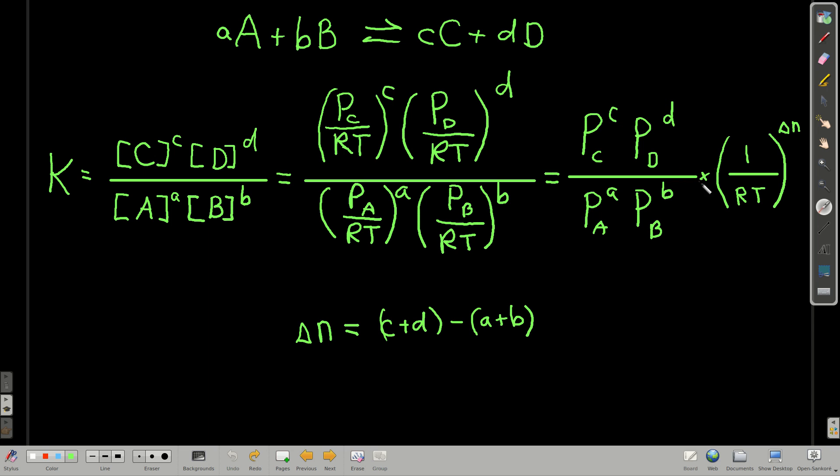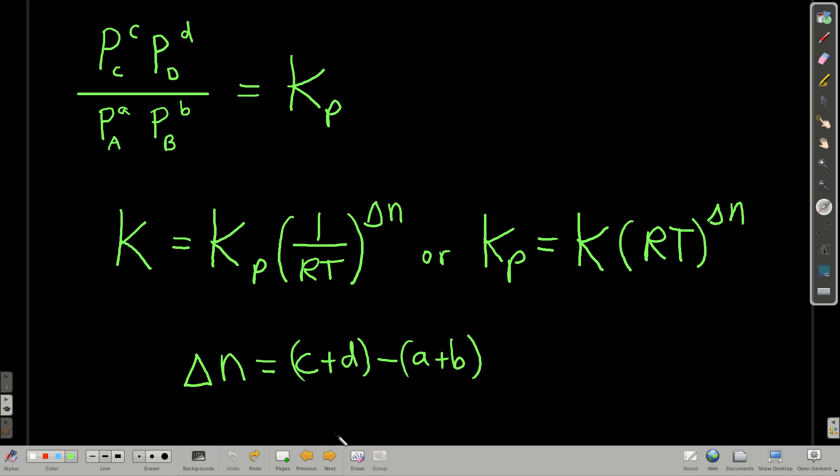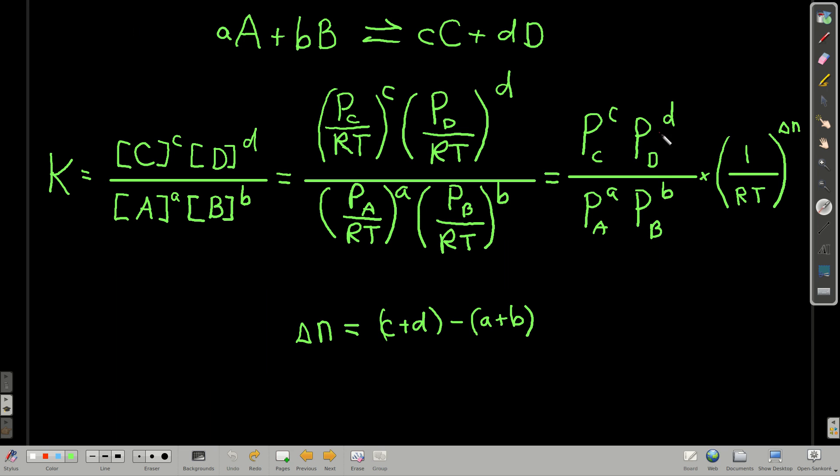So this is a very useful equation. We can rearrange this a little bit. So the equilibrium expression involving the partial pressures, this one right here, we call K sub P, P for pressures. And it's numerically different than K or Kc. We just saw that. What we just saw is that K is equal to Kp times 1 over RT to the delta n.